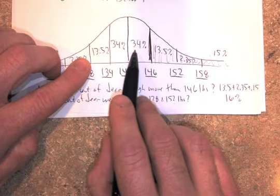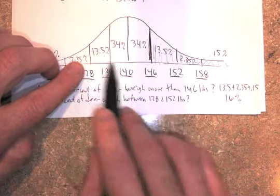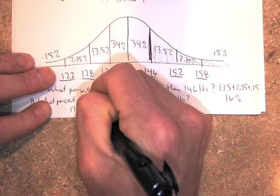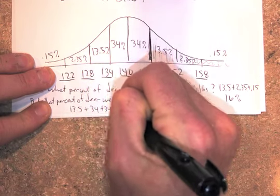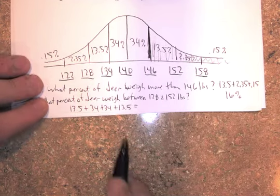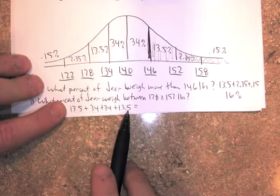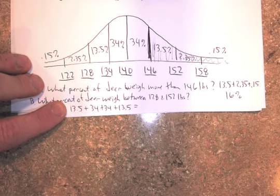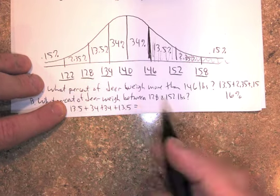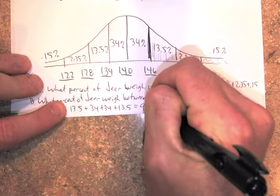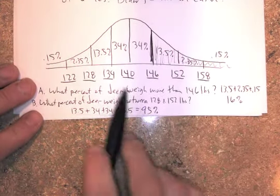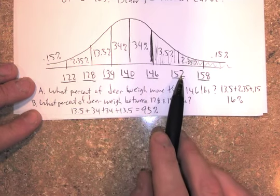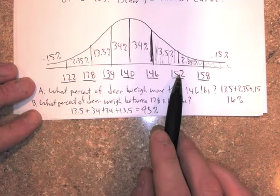So basically 13.5, 34, 34, 13.5. Add those up. So 13.5 plus 34, plus 34, plus 34, plus 13.5. Add them up. What are we talking? 13.5, 13.5 is 27, plus 68, 88, 95, I think. 95 percent. If I add it up right, 95 percent are in here. So we'd expect 95 percent of deer in the population to be between 128 and 152.